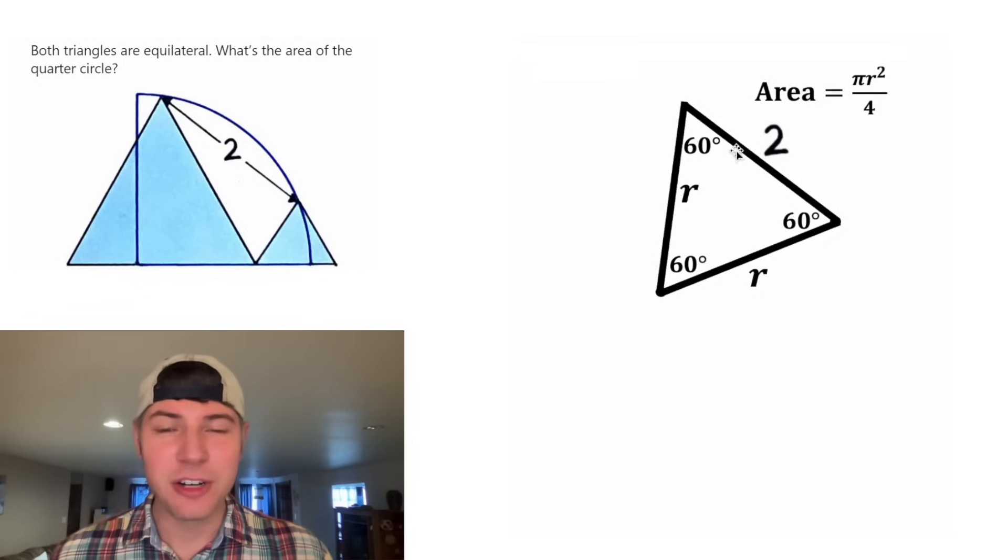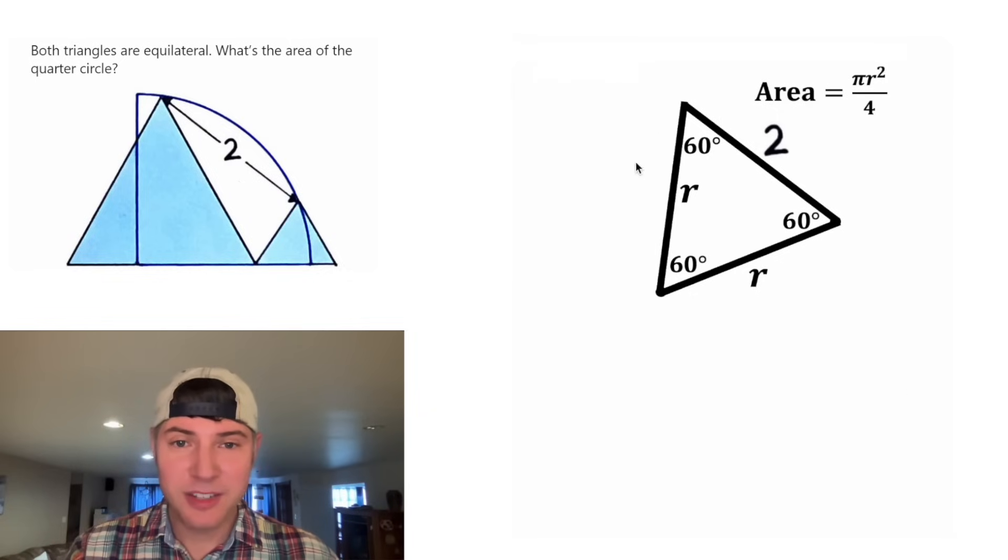And now since all three angles are equal, we know this is an equilateral triangle. So that means all the sides have to be equal. So both of these sides are equal to two.